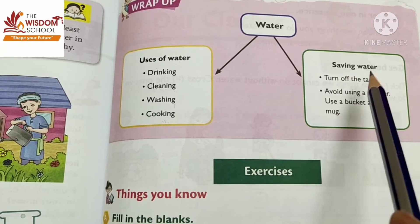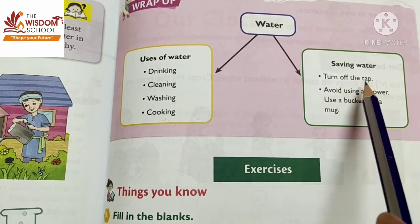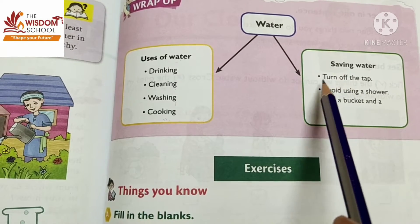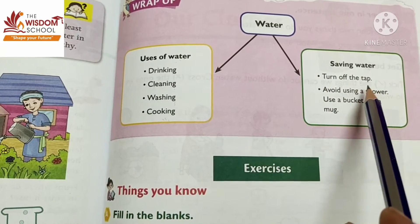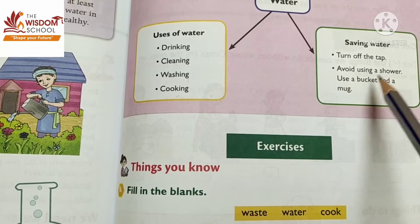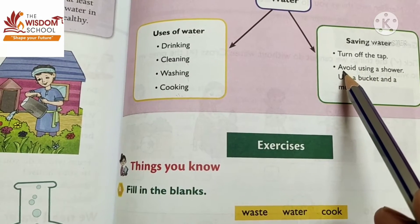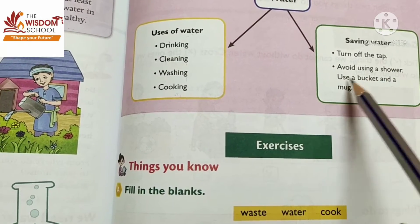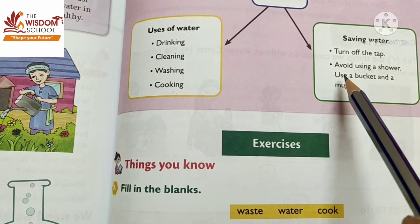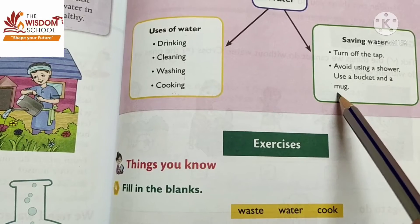How do we save water? Turn off the tap when it is not being used. Avoid using a shower — we should not use a shower. Instead, use a bucket and a mug in the bathroom to save water.